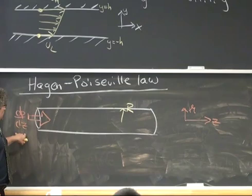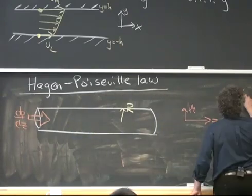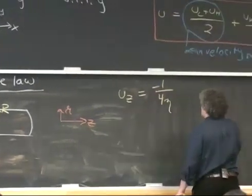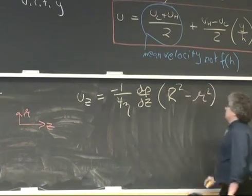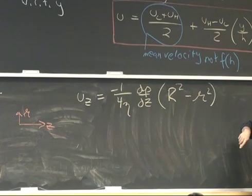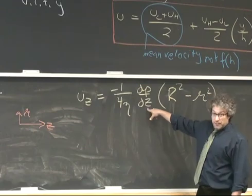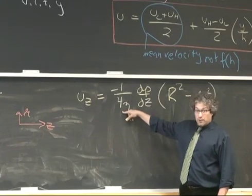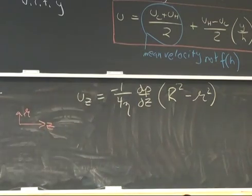If I take this pressure gradient, assume that the velocities at the wall are equal to zero, and solve the governing equation, I get a result very similar to what we got before. The velocity in the z-direction is given by minus 1 over 4 eta times dp/dz times the quantity R-squared minus r-squared. The differences from the parallel-plate case are the z-direction notation, dp/dz instead of dp/dx, and a factor of 2 that arises because the Laplacian in cylindrical coordinates is slightly different — when you do the integration, you get that extra factor of 2.